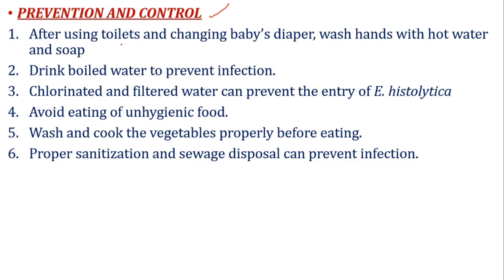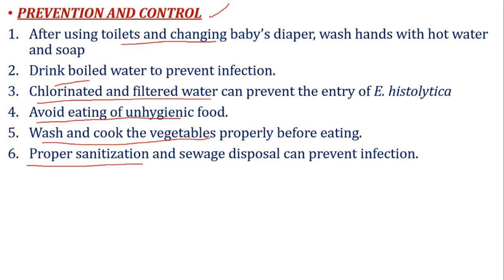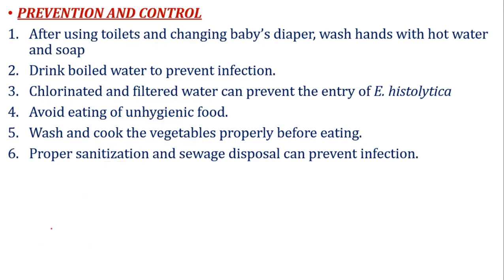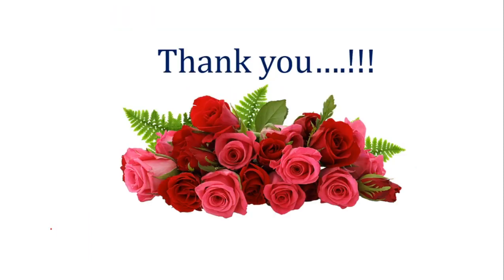To summarize the prevention and control: wash hands with hot water and soap, drink boiled water, use chlorinated and filtered water, avoid unhygienic food, wash and cook vegetables, and maintain proper sanitation. This concludes the topic of Amoebiasis. Thank you.